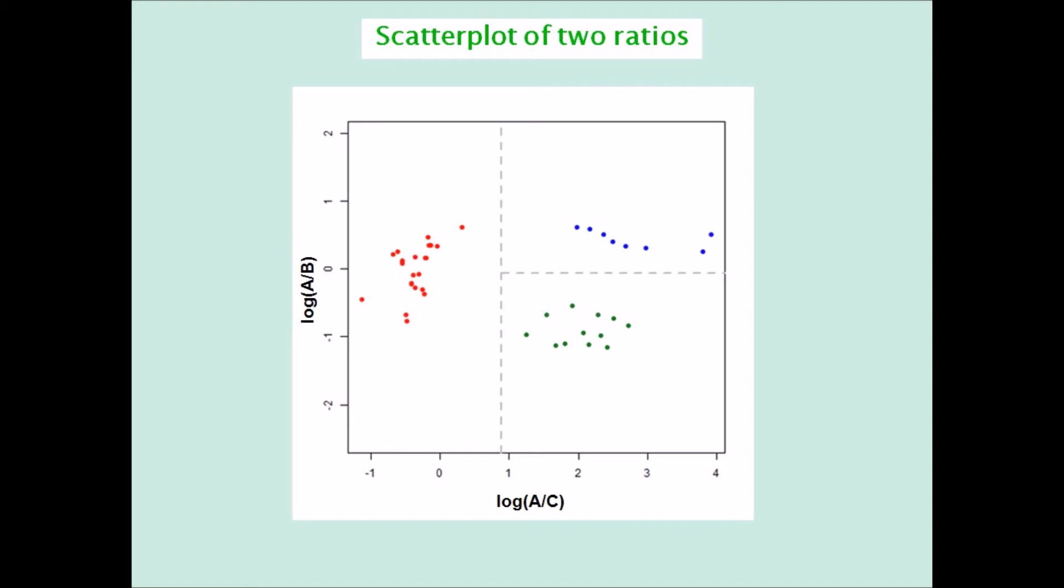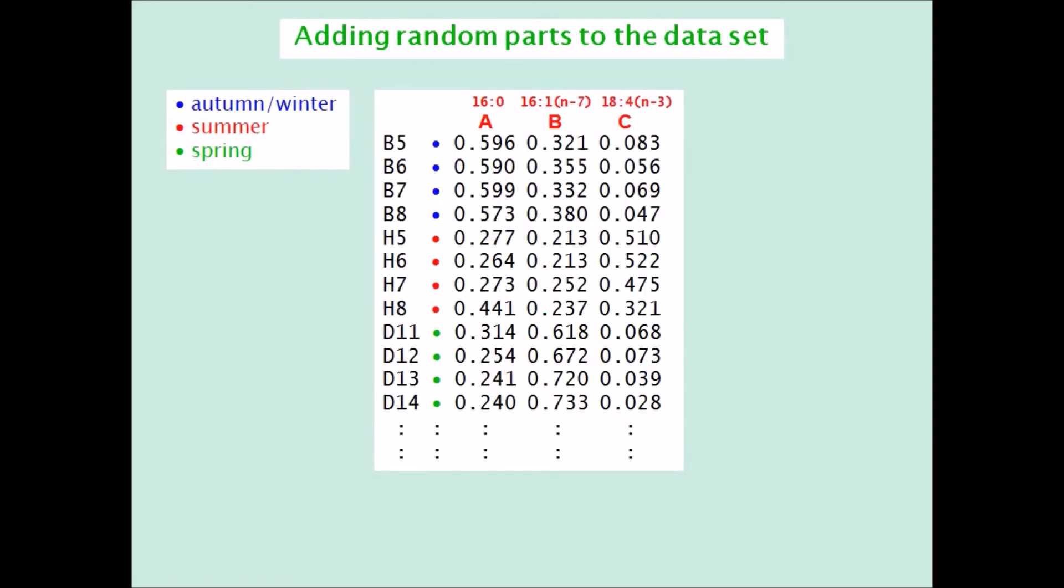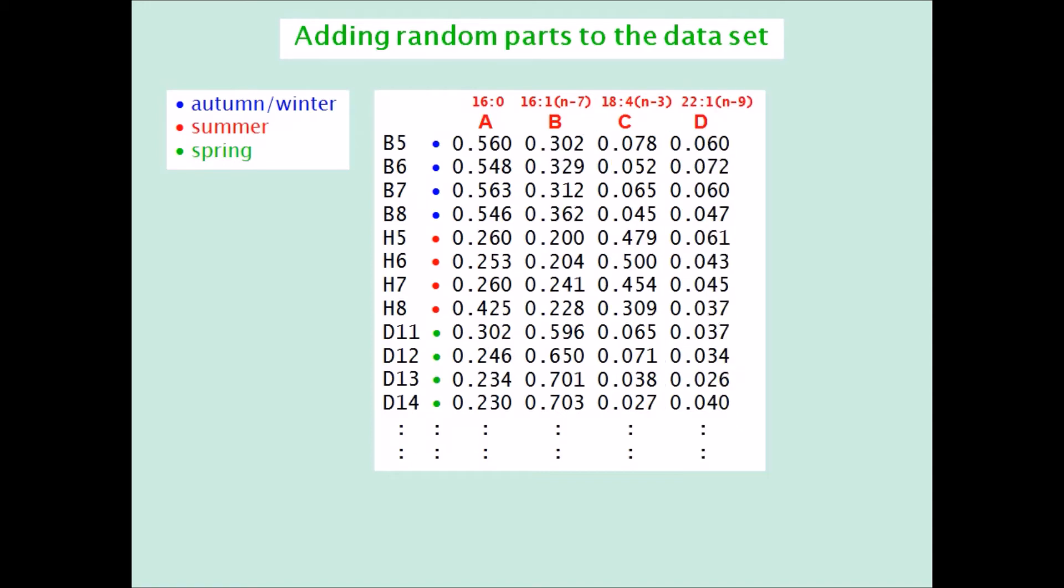Now let's suppose that these three fatty acids were the only relevant parts, and so let's add some random noise to this dataset. One more fatty acid is added from the actual dataset, but its values are randomly shuffled to simulate random noise, and the rows are closed again to add up to one.